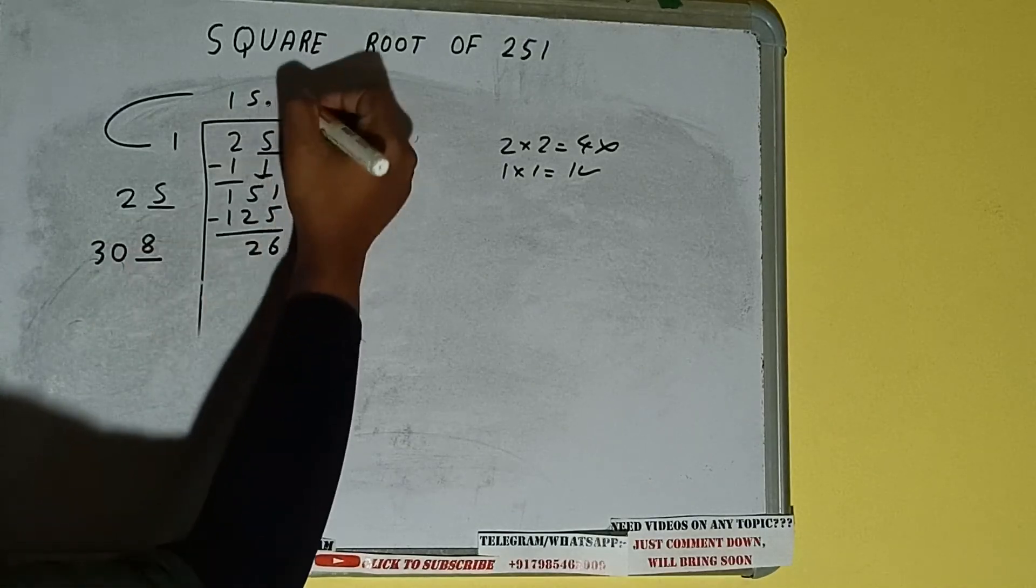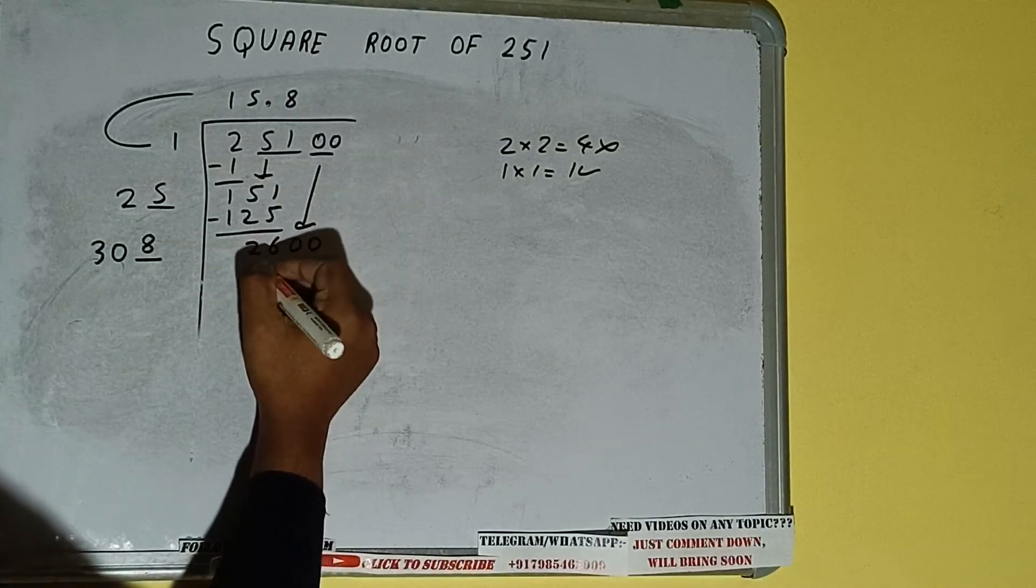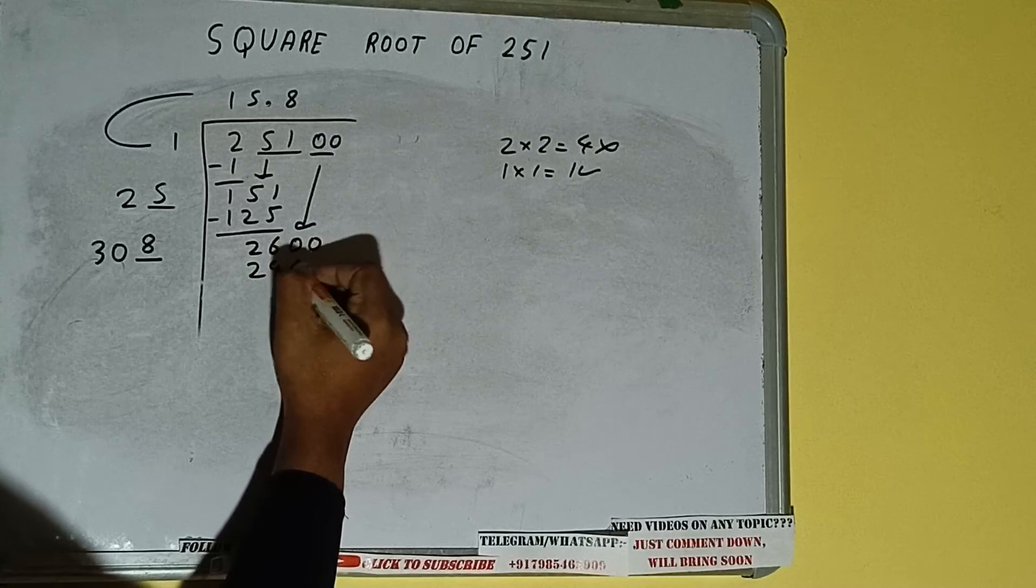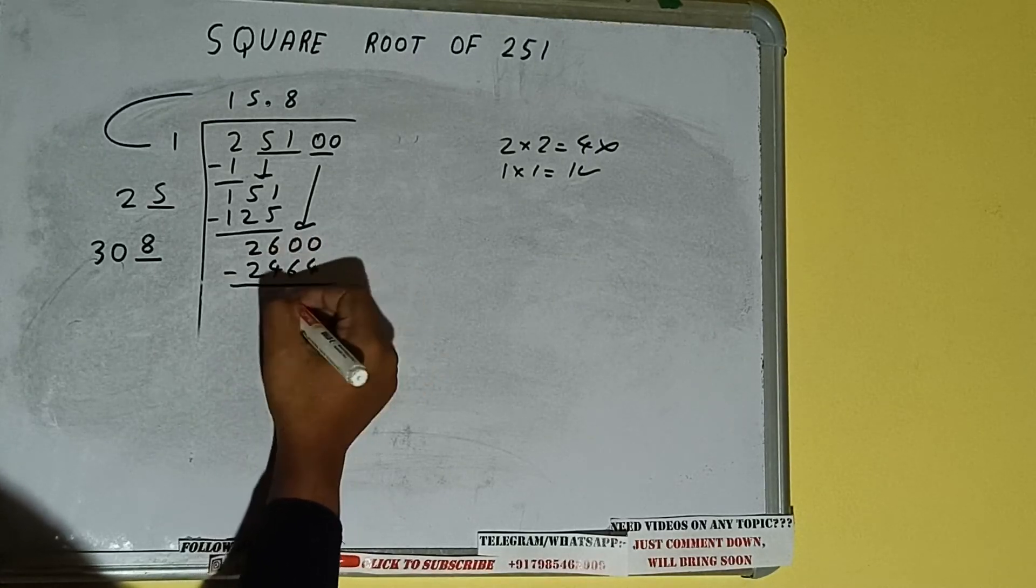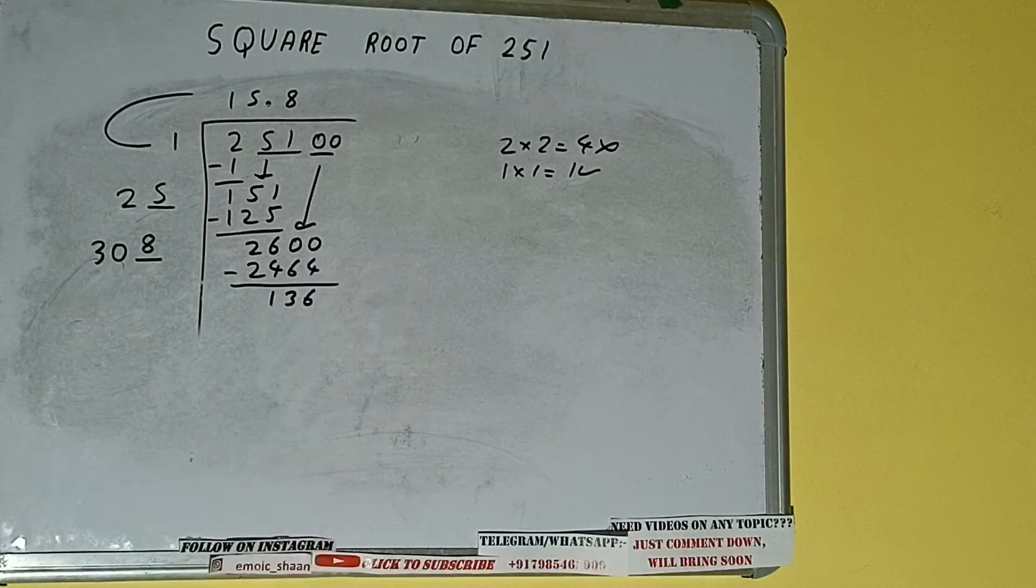Now we can write eight here and eight here, it will be 2464. Subtract, 136 will be left.